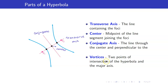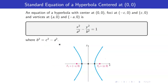The vertices are the two points of intersection of the hyperbola and the transverse axis — let's call these V1 and V2. Here is the equation of a hyperbola with center at the origin, foci at (C, 0) and (−C, 0), and vertices at (A, 0) and (−A, 0). We have the equation X²/A² − Y²/B² = 1.